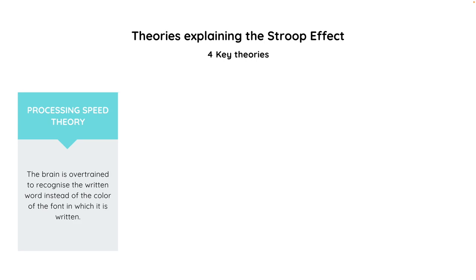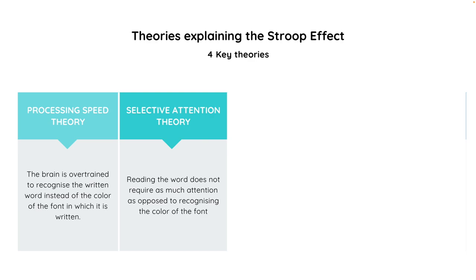The selective attention theory suggests that color recognition, as opposed to reading a word, requires more attention. The brain needs to use more attentional resources to recognize a color than to encode a word, so it takes a little longer. This may be a result of either an allocation of attention to the responses or a greater inhibition of distractors that are not appropriate responses for the given task.